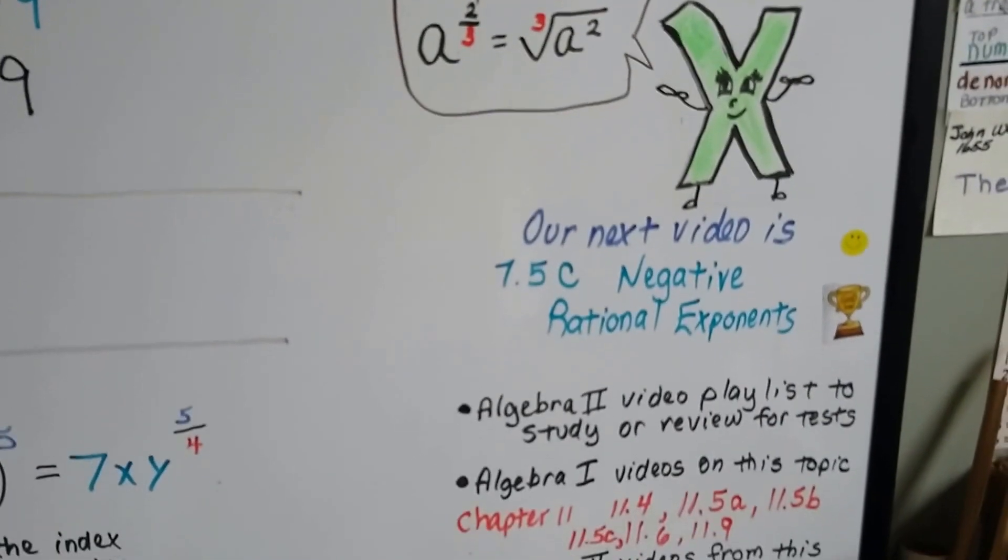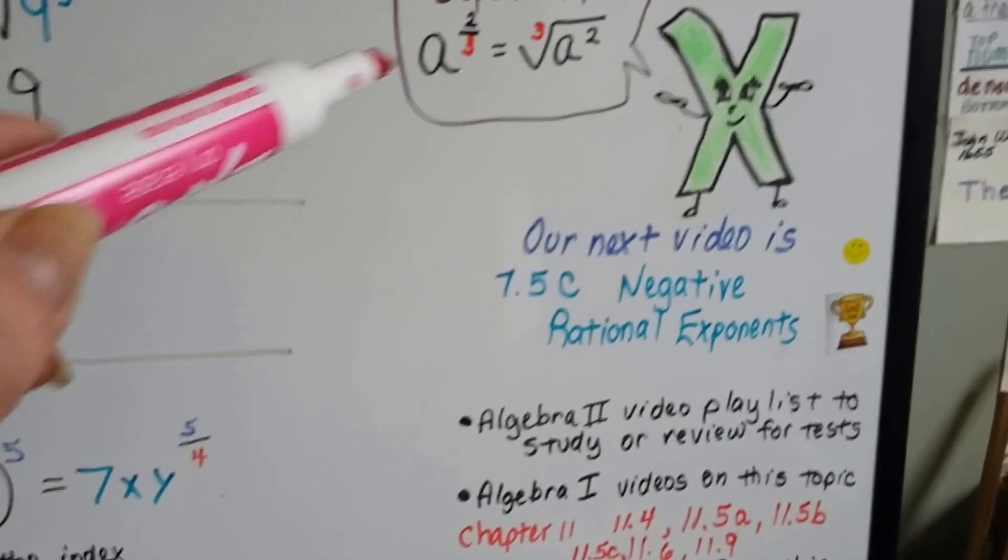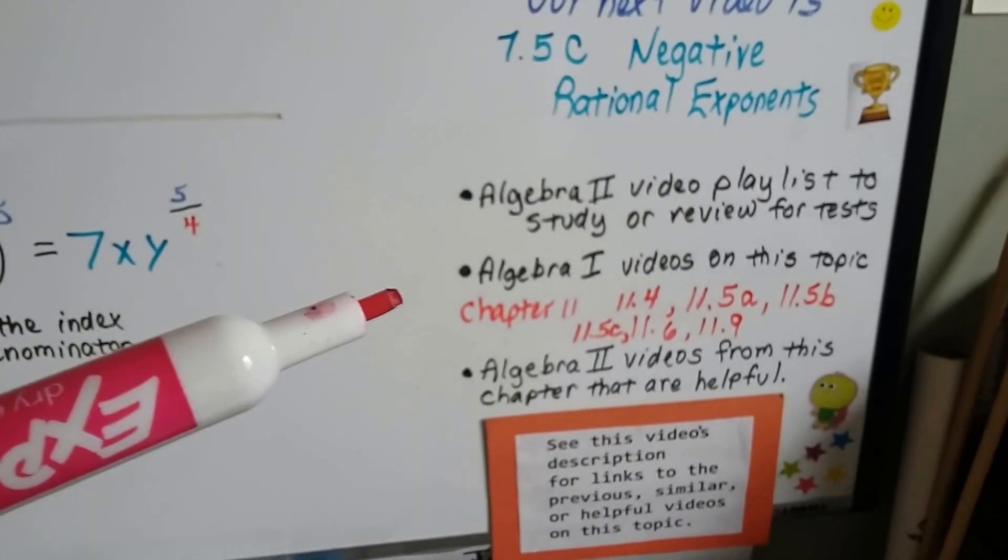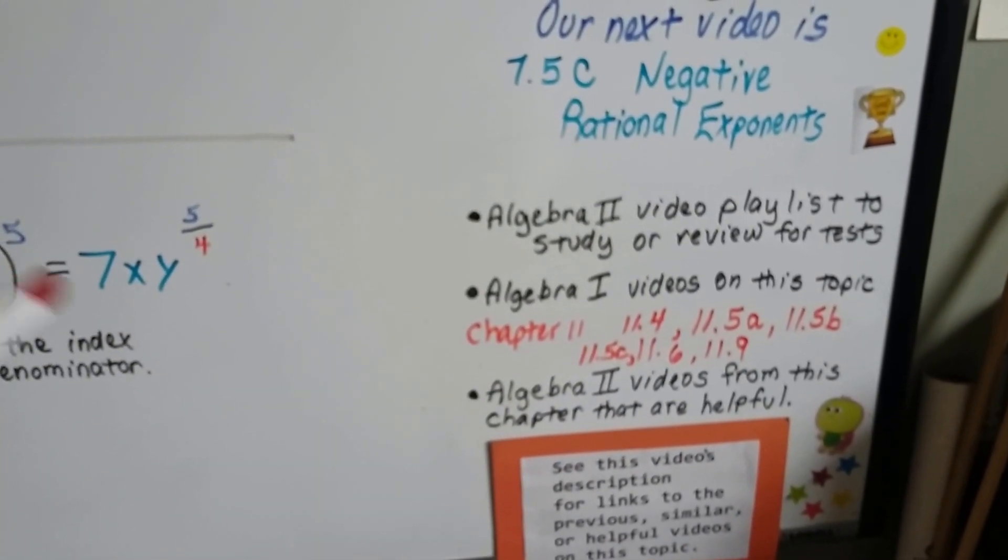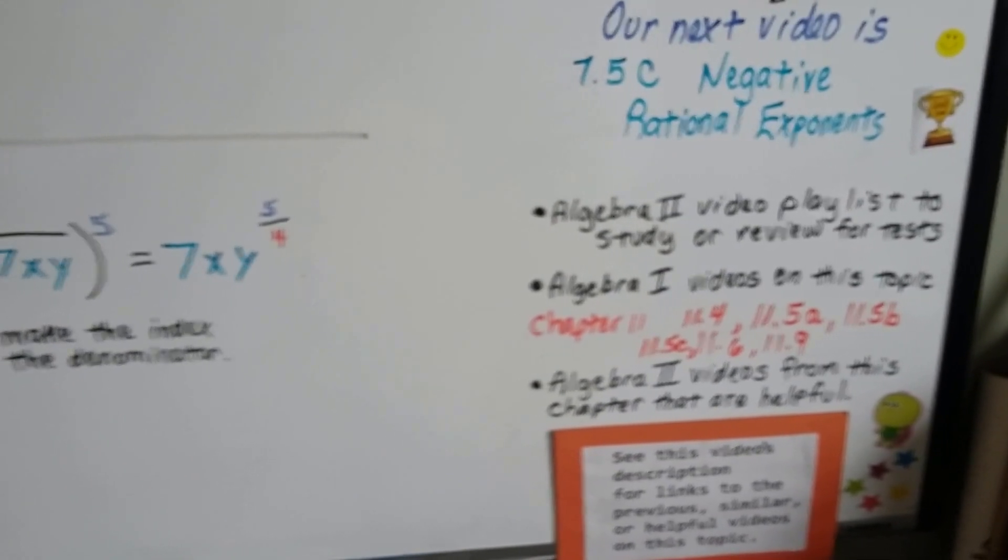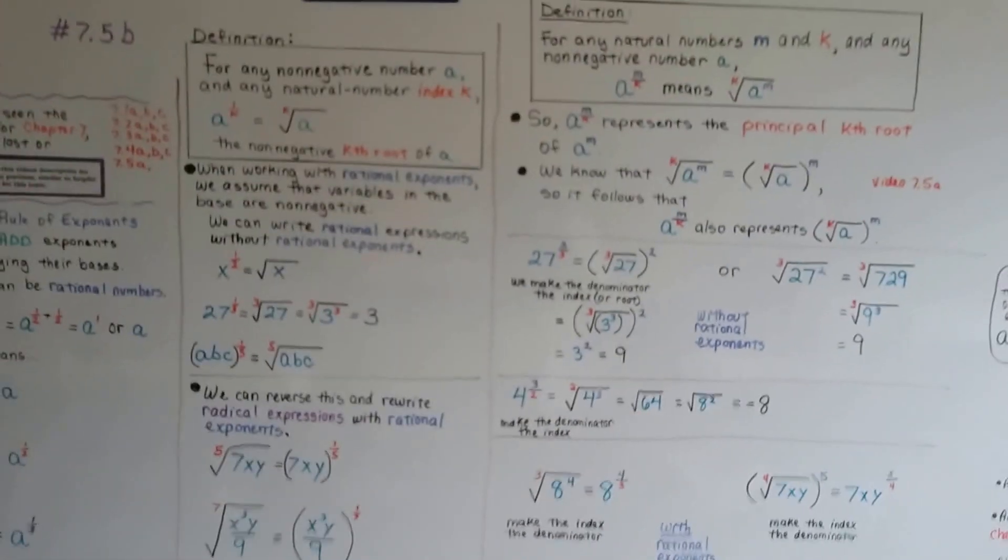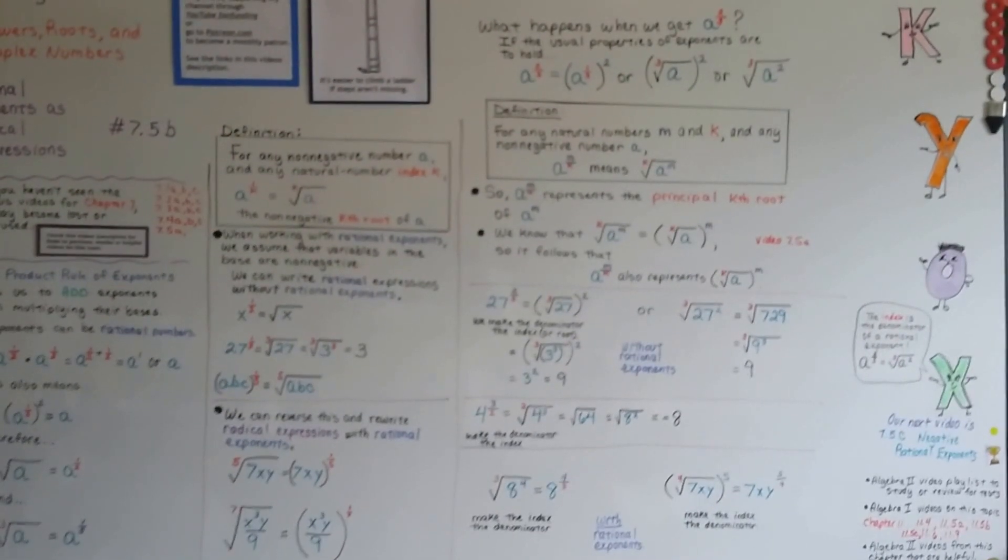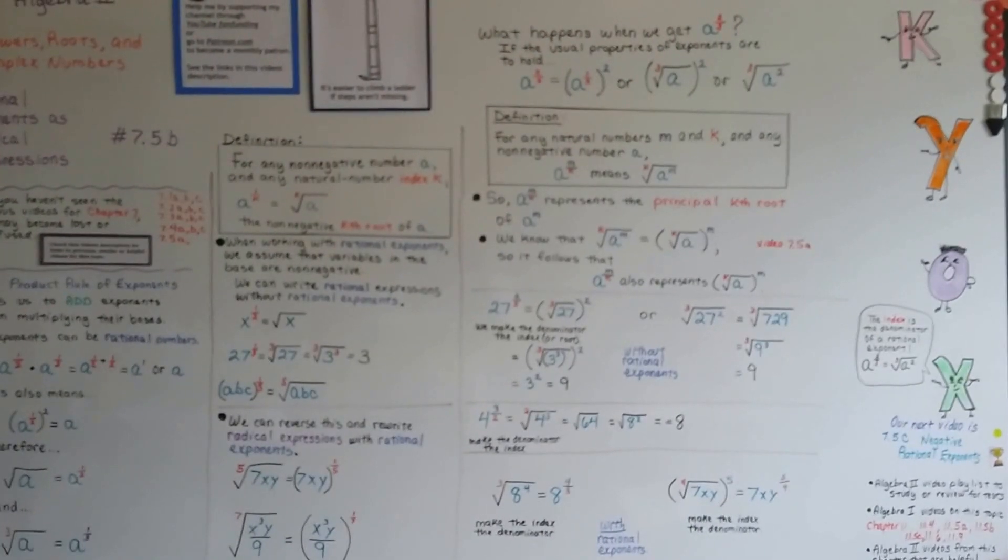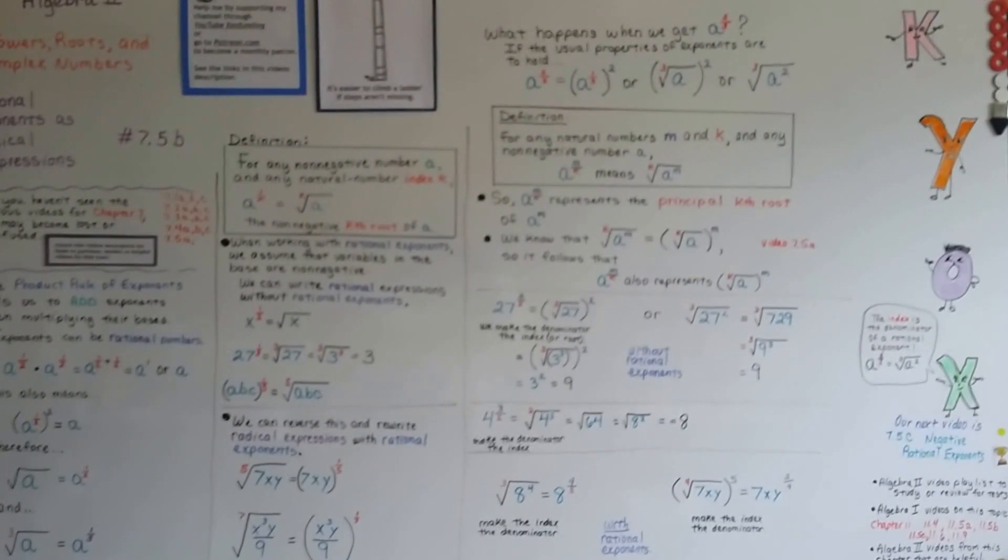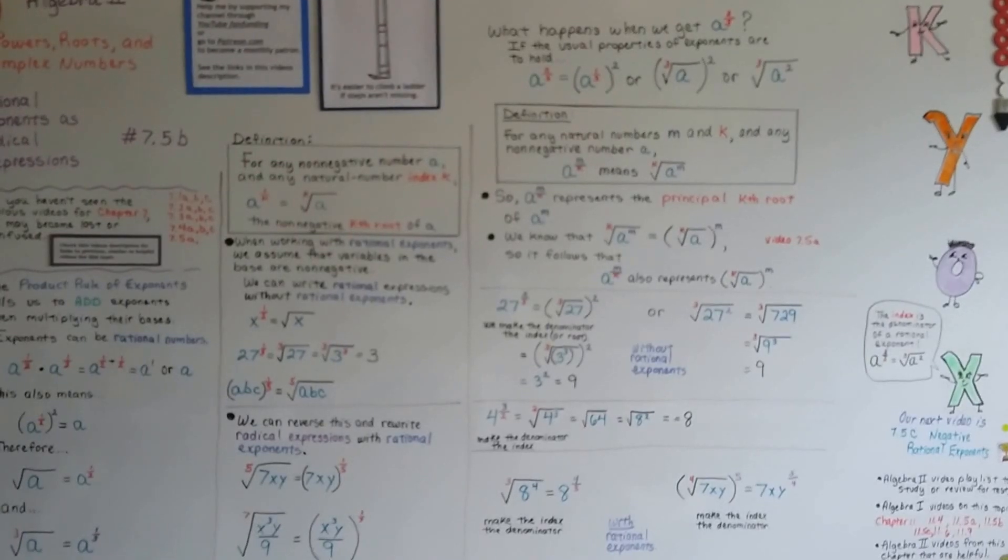Our next video is 7.5c. We're going to talk about negative rational exponents. I'm going to add this video to the Algebra 2 playlist so you can study. There's going to be links to Algebra 1 where we talked about this back last year. 11.5c covers this exact same thing almost. And then all the videos for Chapter 7 that we just did, all those links are going to be in there too. Don't forget on Patreon.com, my dogs and I would really appreciate it if you would become a monthly patron for like just a dollar a month even, or whatever value you think you'd like to support me with. You can also go to YouTube Fan Funding. Don't forget to like the video if I've helped you. I'll see you next video. Bye bye.